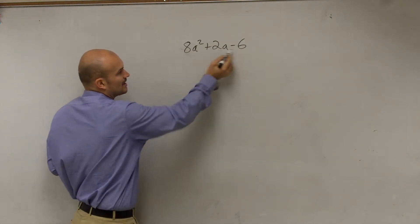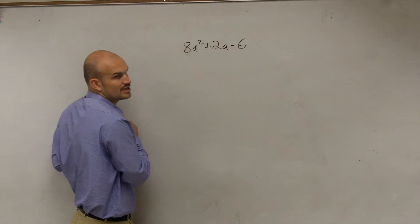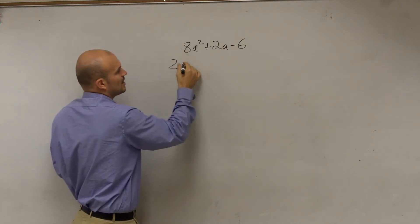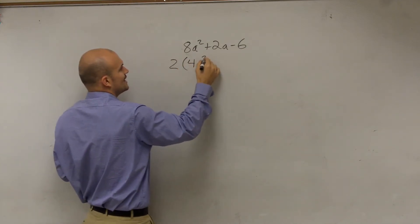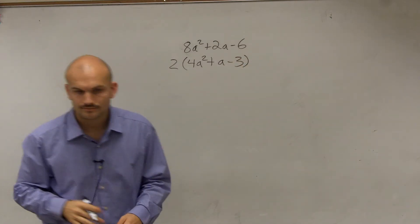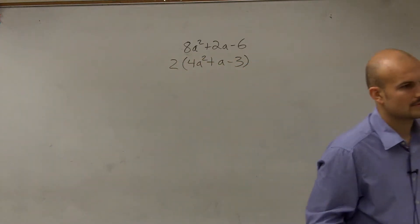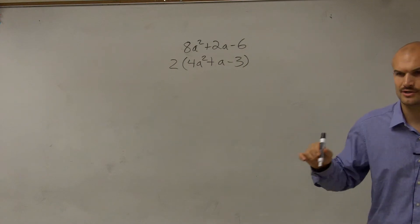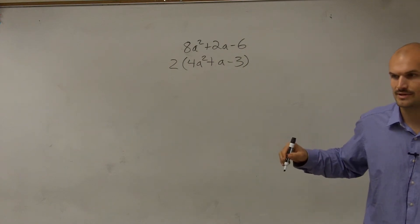So I look at this, and what Kevin noticed was all three of these share a 2. So I can factor out 2. So I'm left with 4a squared plus a minus 3, all right? And you guys are writing this down on your homework quiz that you guys got, right?